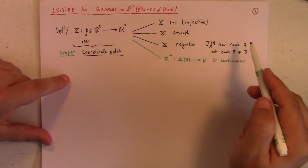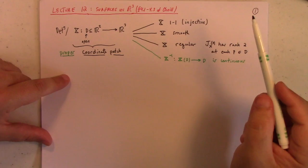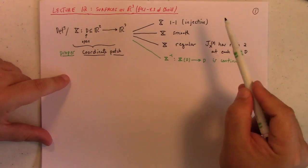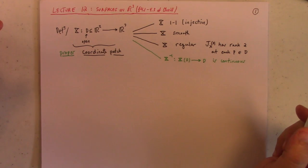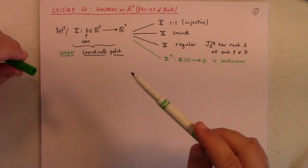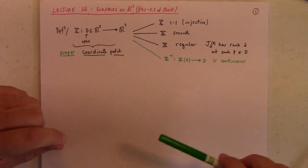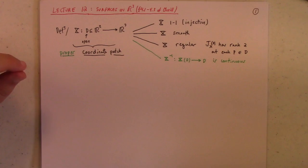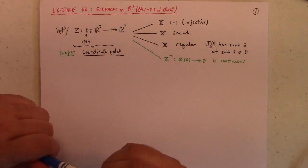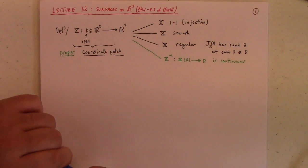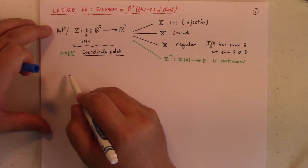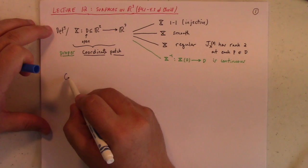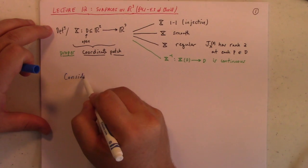This also would mean that the patch itself is an open map. It would take open sets to open sets. Well, I guess that's a question, though. What do we mean by open set on a subset of R3? So, we're trying to describe what is a surface. So, I guess, before I even talk about this coordinate patch business, let me just say...